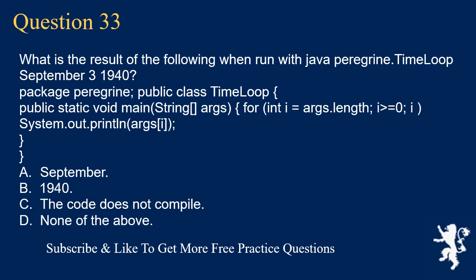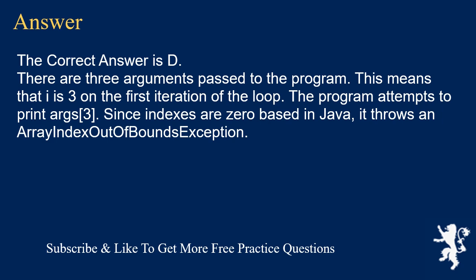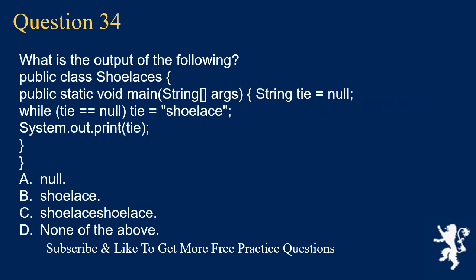Question 33. What is the result of the following when run with java peregrine.TimeLoop September 3 1940? for (int i = args.length; i >= 0; i--) { System.out.println(args[i]); } A. September. B. 1940. C. The code does not compile. D. None of the above. The correct answer is D. There are three arguments passed to the program. This means i is 3 on the first iteration. The program attempts to print args[3]. Since indexes are 0-based in Java, it throws an ArrayIndexOutOfBoundsException.